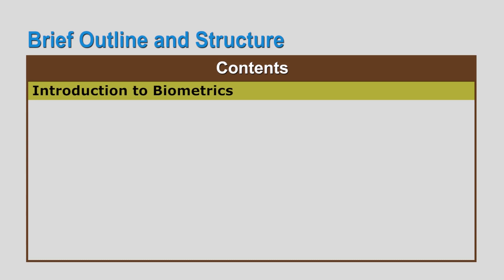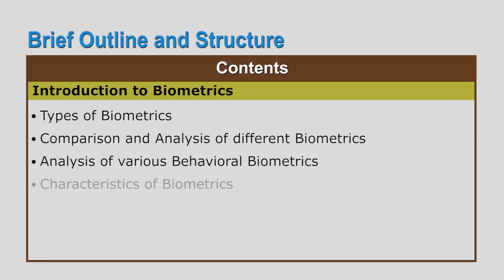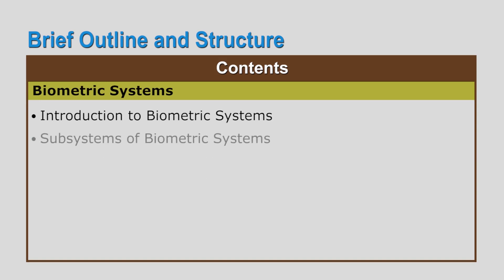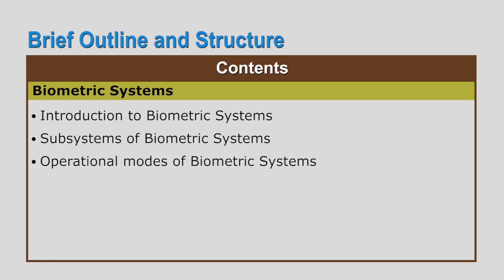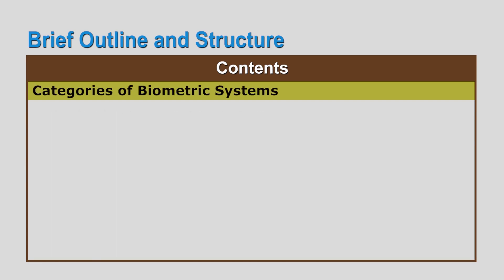During the second phase we are going to discuss introduction to biometrics, dealing with different types of biometrics, comparison and analysis of different biometrics, analysis of various behavioral biometrics, characteristics of biometrics, applications of biometrics, and next is the biometric systems — covering introduction to biometric systems, subsystems of biometric systems, and operational modes of biometric systems.